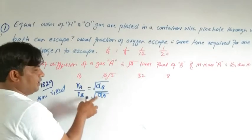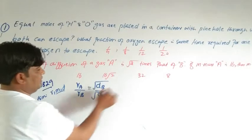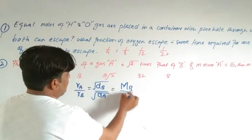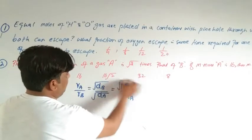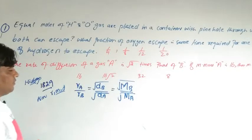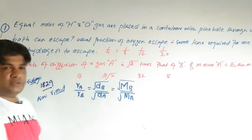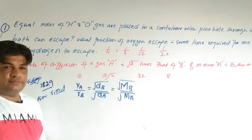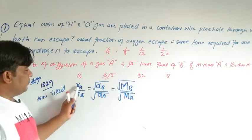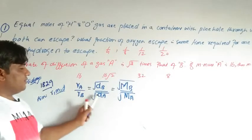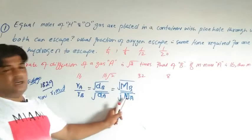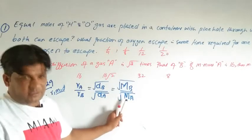In place of density we can write molar mass, so the ratio becomes √(M_B / M_A). This is the mathematical form of Graham's Law of Diffusion or Effusion. The rate of diffusion or effusion of a gas is inversely proportional to the square root of its density or the square root of its molar mass.